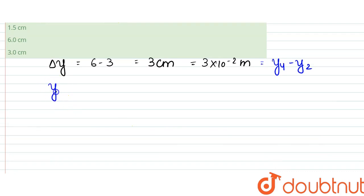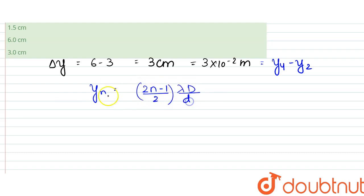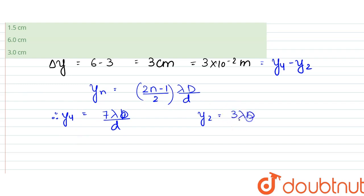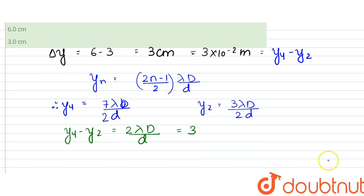For minima, the position formula is y_m = (2n − 1)/2 × λD/d. Therefore, y₄ = 7λD/2d and y₂ = 3λD/2d. So y₄ minus y₂ equals (7 − 3)/2 × λD/d = 2λD/d, which equals 3 centimeters. From this, λD/d equals 1.5 centimeters.